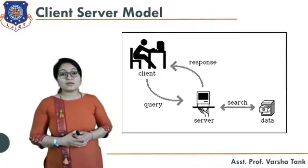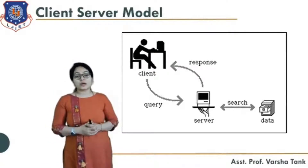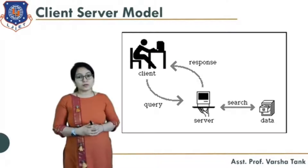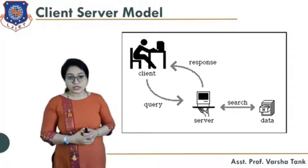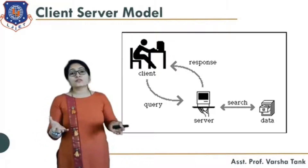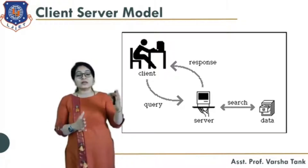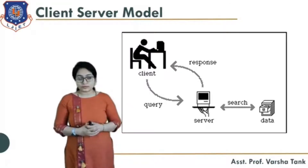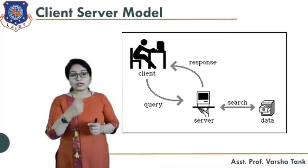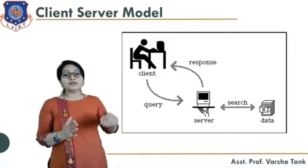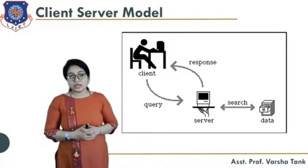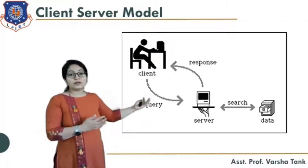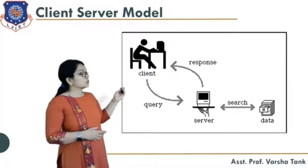Next is the client-server model. The client wants some information, so the client queries and the server replies. For example, if you search anything on Google, you type a keyword like 'operating system structure' and it gives numbers of responses — that is one example of the client-server model. The server searches according to the keyword provided and provides all the details on your page. Here, the client queries the server, the server retrieves the data, and gives the response back to the client.